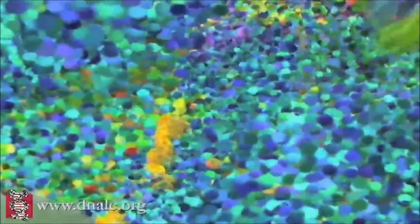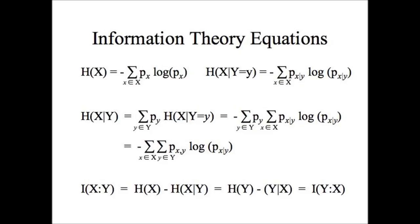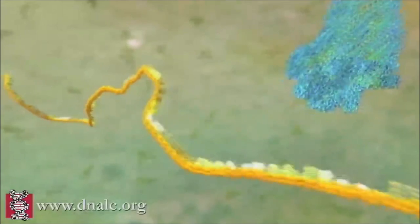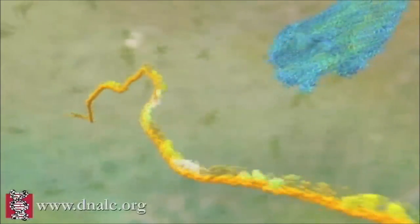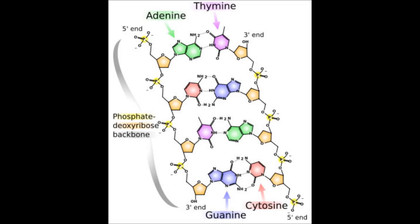DNA does not contain information. It contains biochemical potential, and as such is subject to the laws of statistical thermodynamics and biochemistry, not the laws of information. These are not letters that follow someone's instructions. These are nucleic acids that undergo purely physical processes. Their arrangement can be described in terms of information, but that does not make DNA an information system.